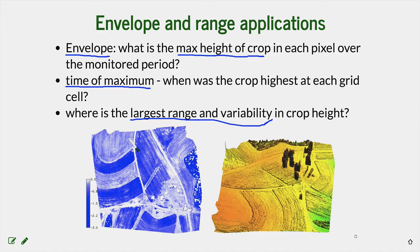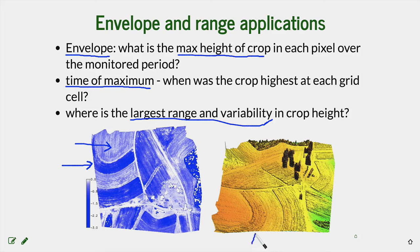You can derive the largest range and variability of crop height using these tools. The envelope example shows that the highest crop throughout the area was captured in two or three specific fields, while other fields never had crop higher than about 30 centimeters during the survey period. When displayed in 3D, the envelope surface clearly shows differences in vegetation height.